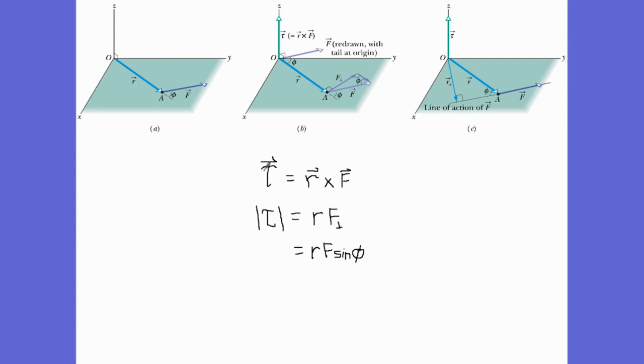Recall that torque is the cross product of R and F, so we say R cross F. The magnitude of that cross product is R times F perpendicular, which we know is calculated R F sine phi. So R F sine phi is the magnitude of my torque.